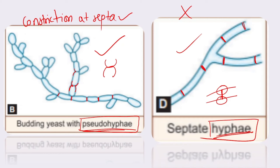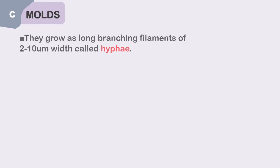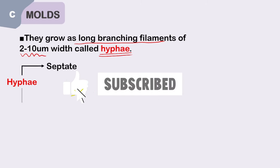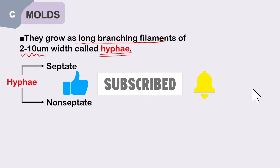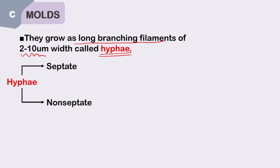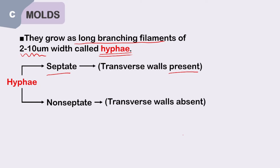Now shifting to molds. Molds are filamentous forms — they grow as long branching filaments with a width of nearly 2 to 10 micrometers, termed hyphae. Hyphae can be of two types: septate hyphae or non-septate (aseptate) hyphae. The difference is simply the presence or absence of transverse walls. If transverse walls are present, it is septate hyphae; if absent, it is aseptate hyphae.